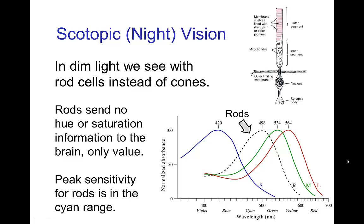One last topic about value is that under very dim lighting conditions — typically a very dark night with minimal artificial lighting — the cones basically turn off and our vision is due instead to the rod cells in our retina. Now the rods do not distinguish color, so they don't send any hue or saturation information to the brain, only value. Here we have the sensitivity curves for the blue, green, and red cones, and then the black dotted line is for the rods. You notice that the sensitivity of the rods is closer to the blue side of the spectrum compared to the green and red.